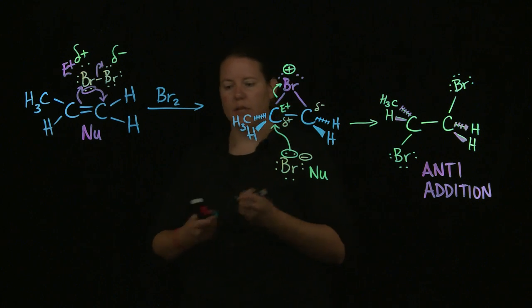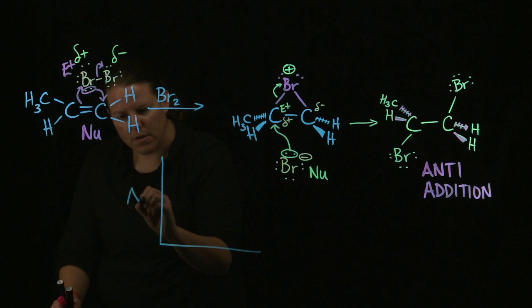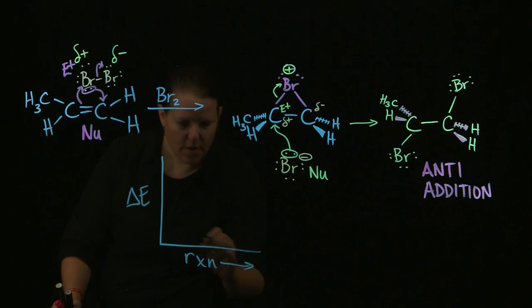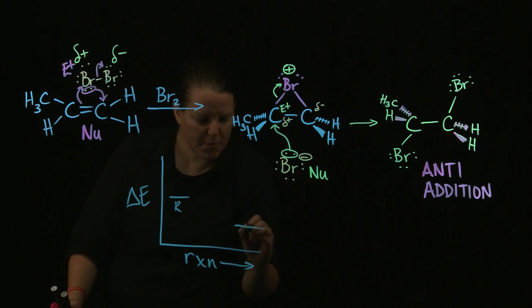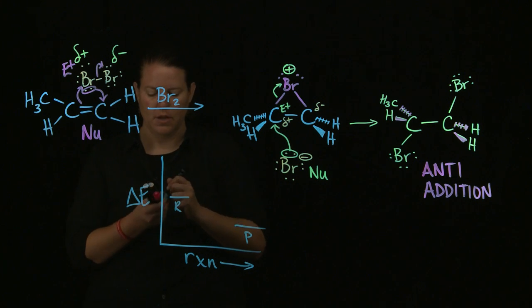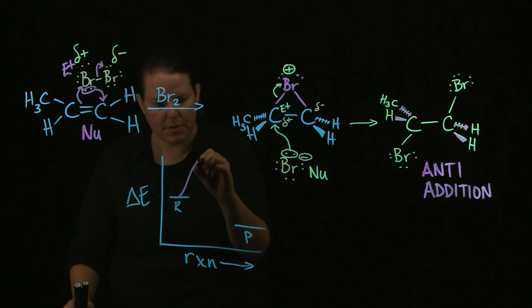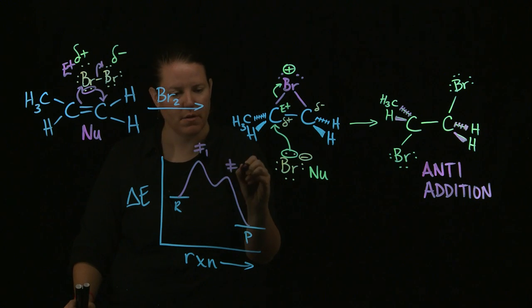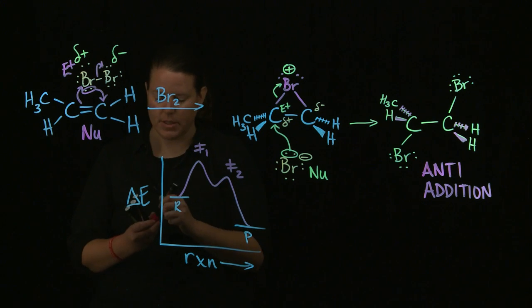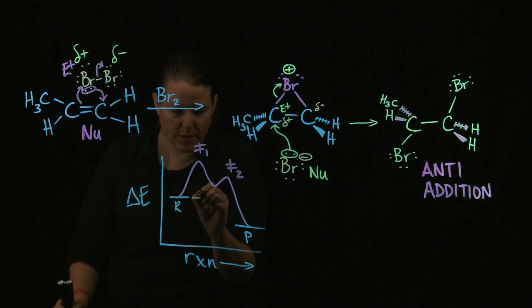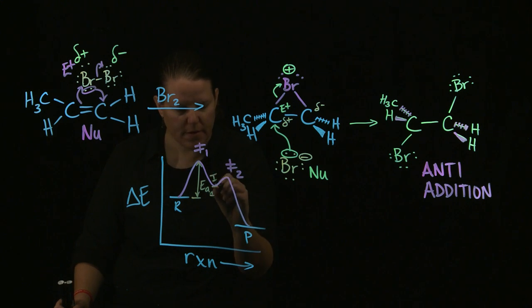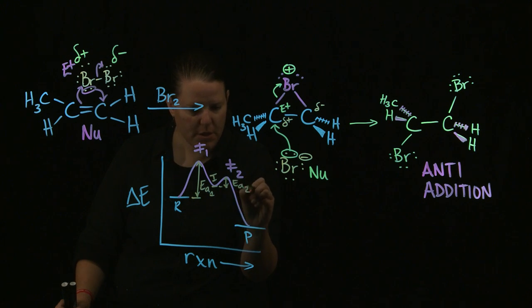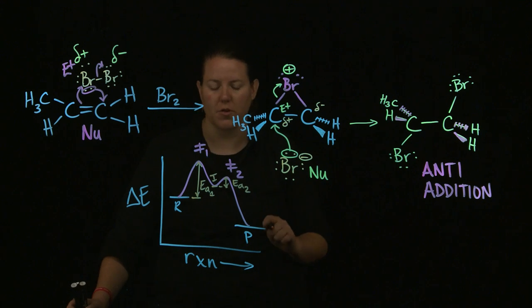That means that if I had an energy diagram for this, here's my delta E. Here's the reaction as it progresses. Here's my reactants. Here's my products. I'm assuming always that my products are lower energy in the end than my reactants. Then if it's a two-step process, we would expect two humps and two transition states. There's transition state one, transition state two. And notice that the difference in the activation energies should be different between transition state one. And this is the intermediate. The intermediate is this little line right here. The intermediate in this case is the bridged halonium ion.